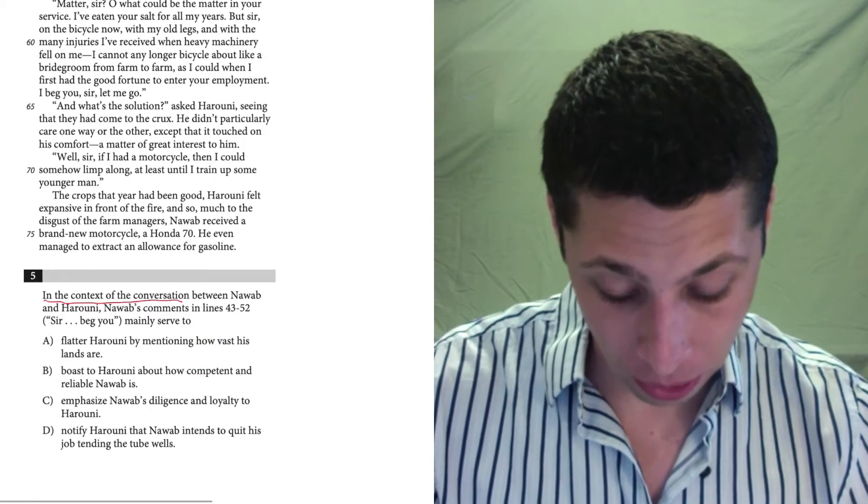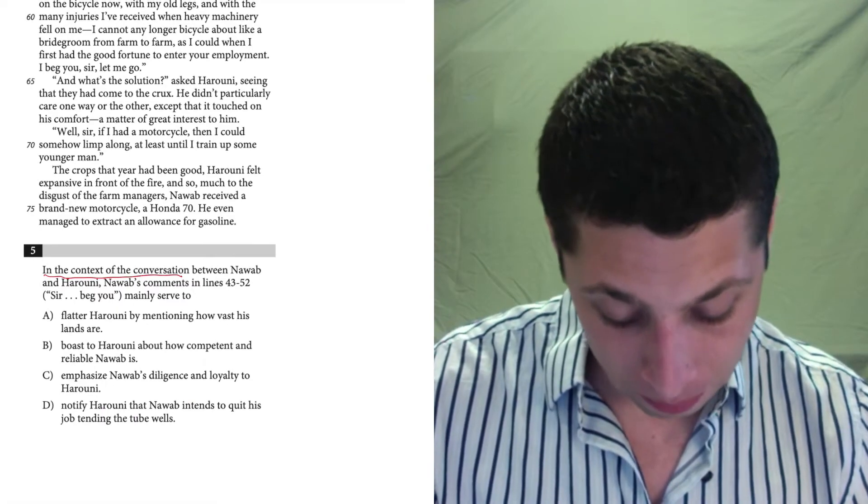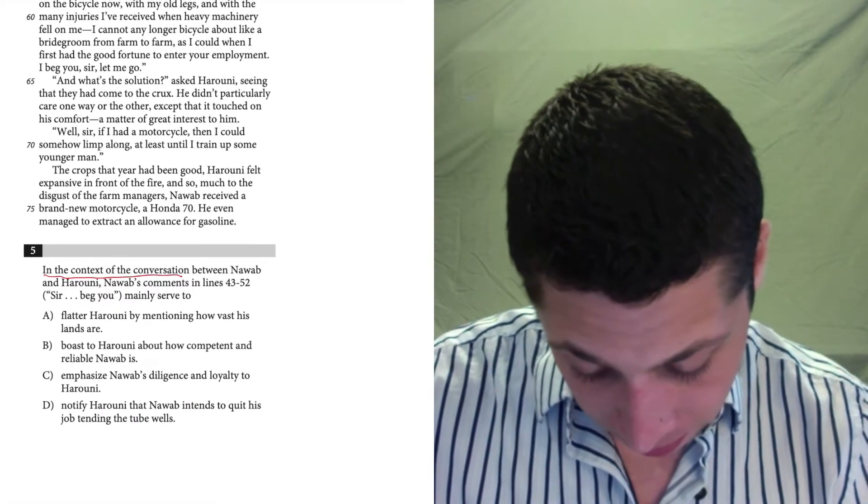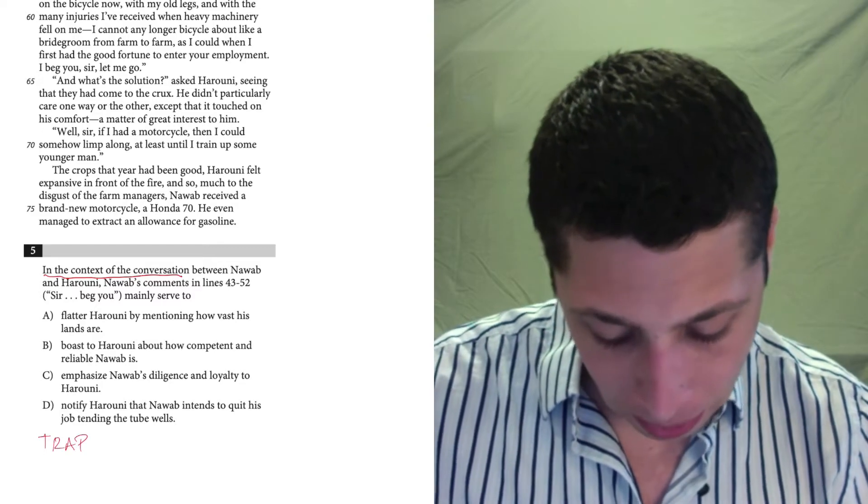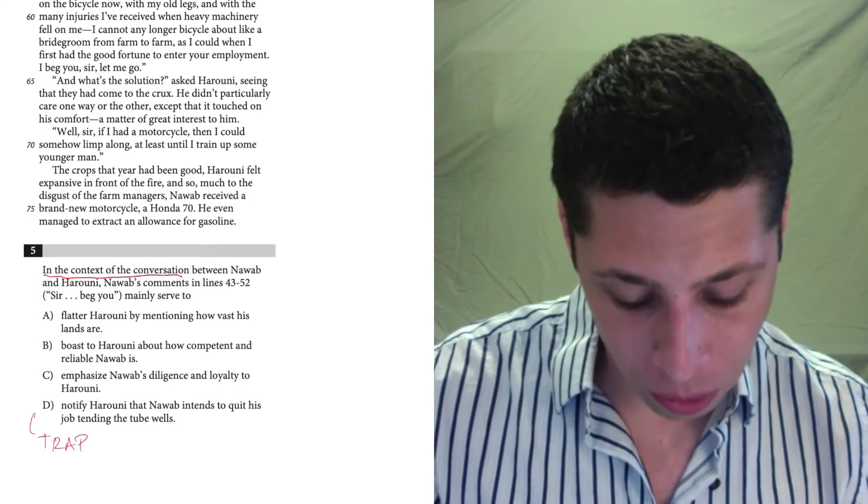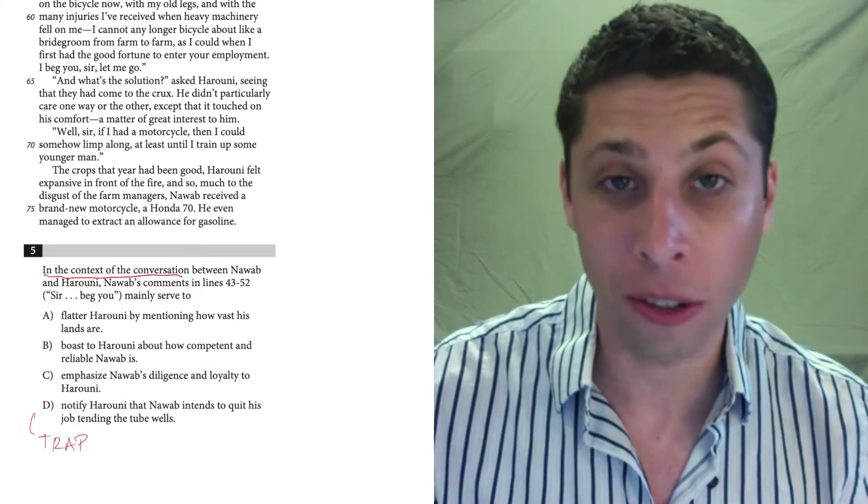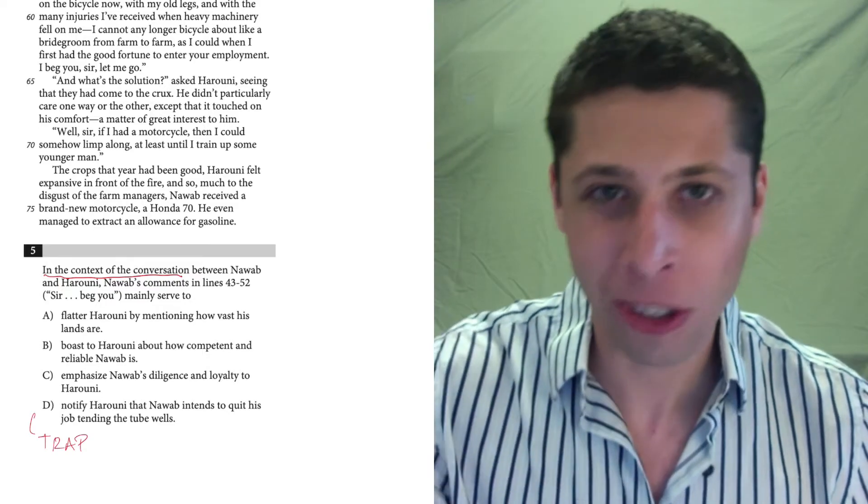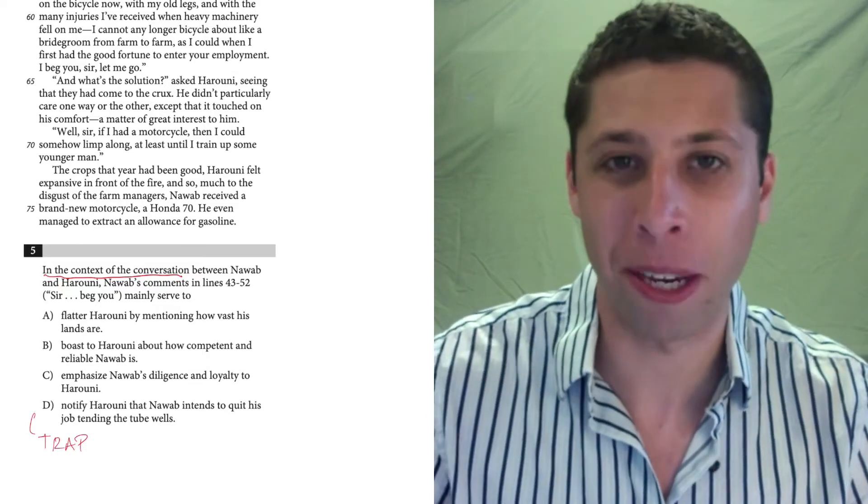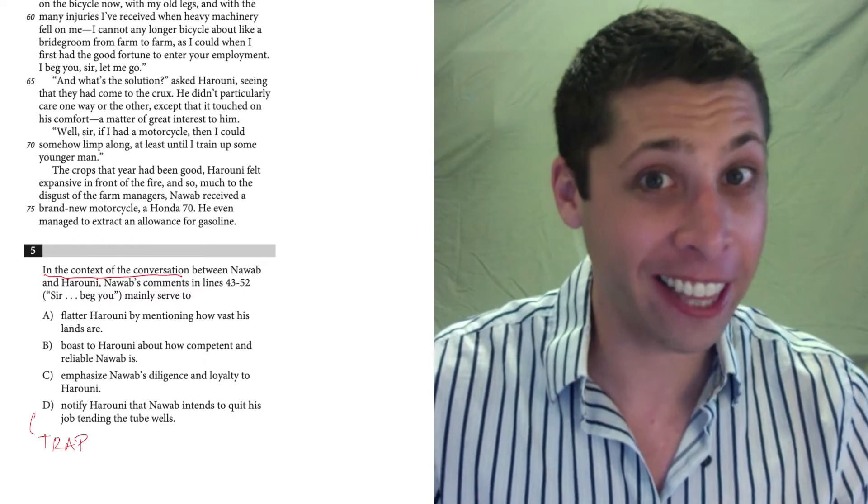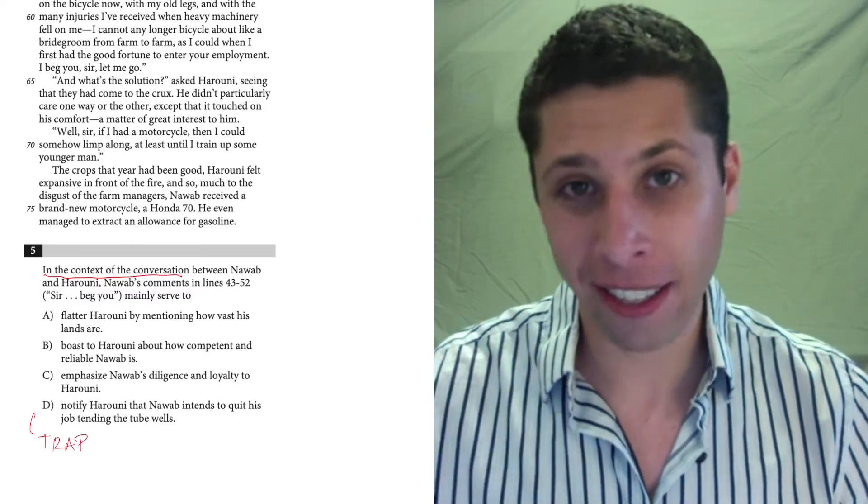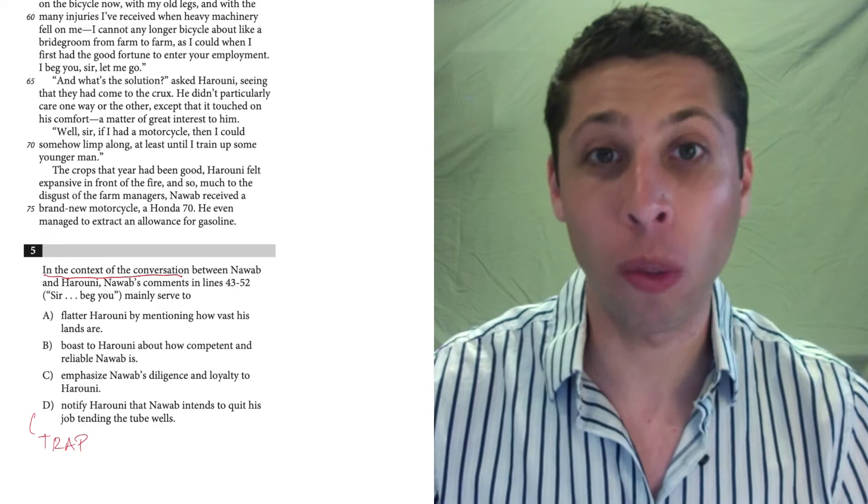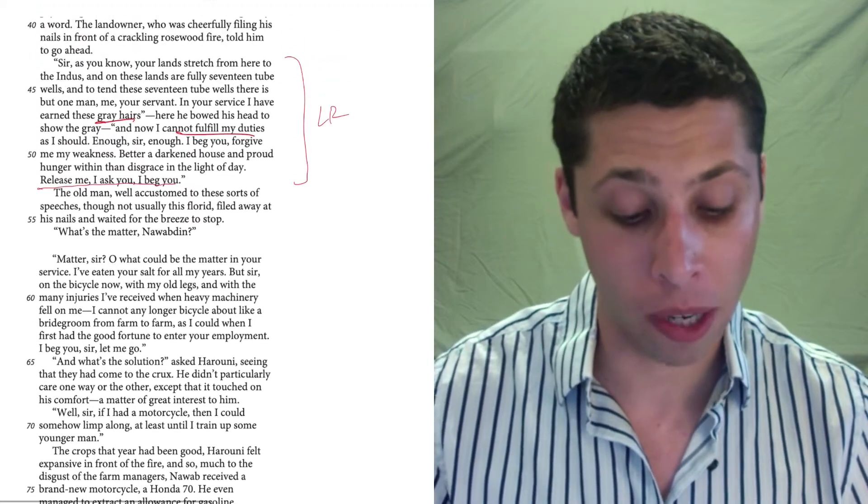So that seems pretty straightforward. He wants to quit the job. And sure enough, if we look at the choices, D matches with that. But this is a trap. Notify Haruni that Nawab intends to quit his job tending the tube wells. Well how could that not be true? It says, I beg you, release me, right? It sounds like he's saying exactly that. But if we read the context, if we read the entire conversation, we get a lot more information about what's going on here.